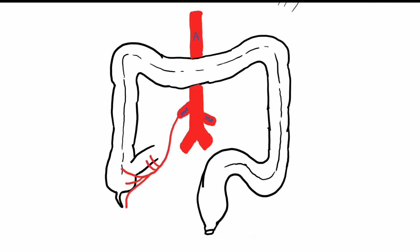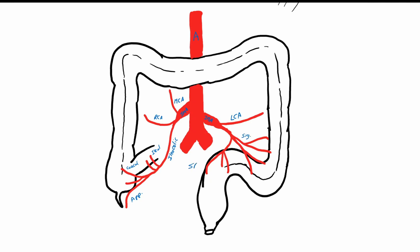Branches of the superior mesenteric artery supply the colon until approximately the distal third of the transverse colon. Then on the left side, the inferior mesenteric artery takes over. Its branches are the left colic artery, the sigmoid arteries, and the superior rectal arteries.